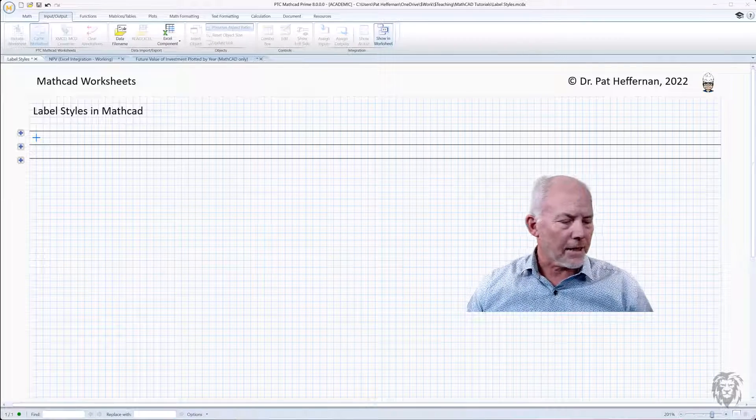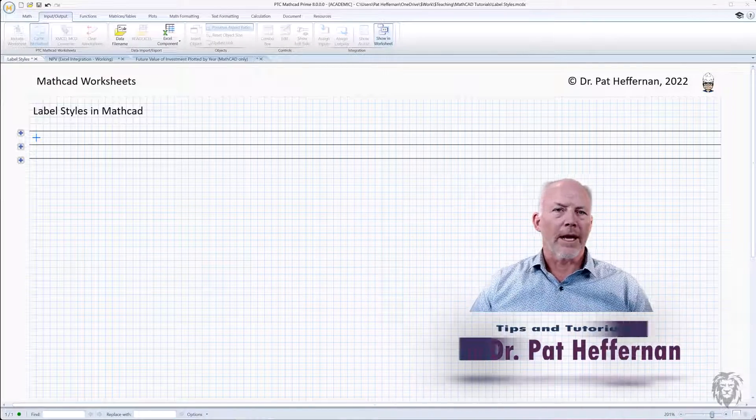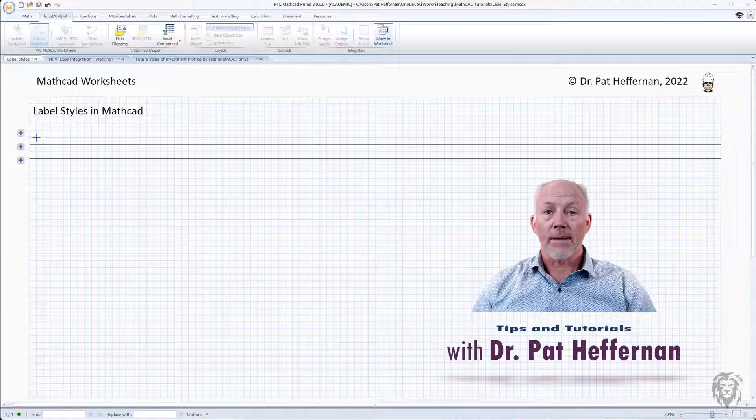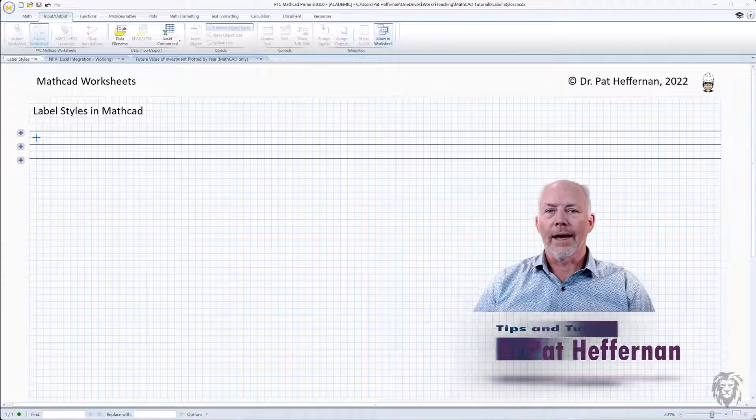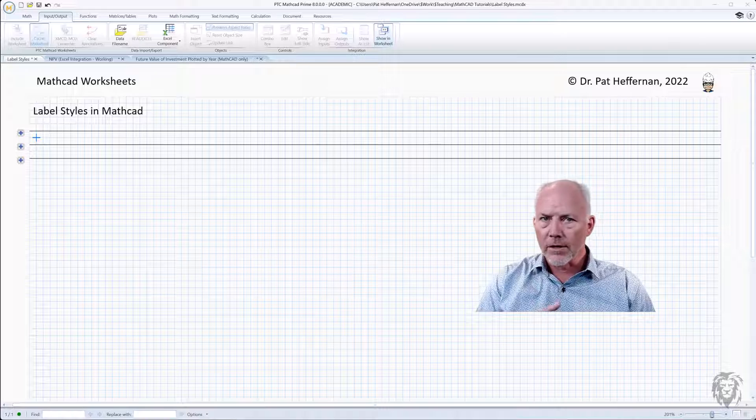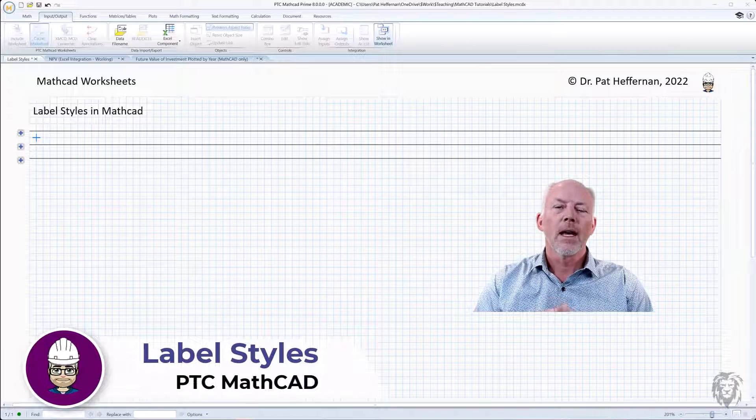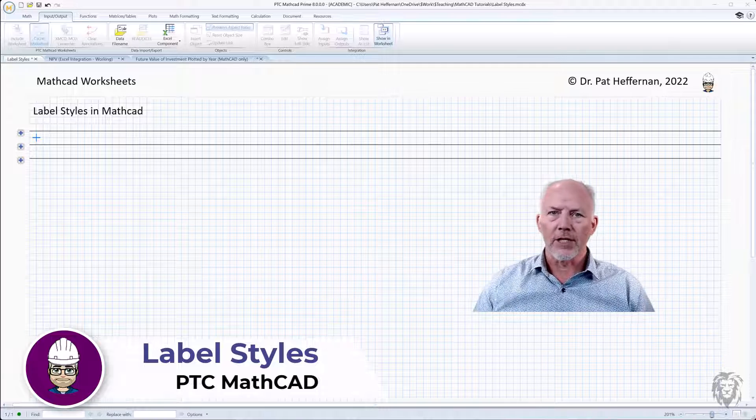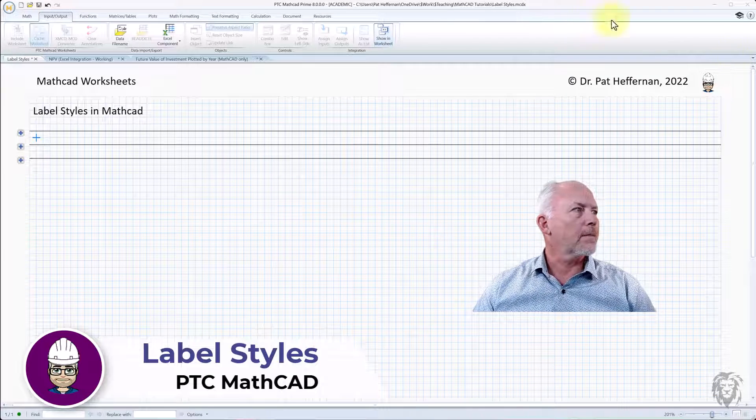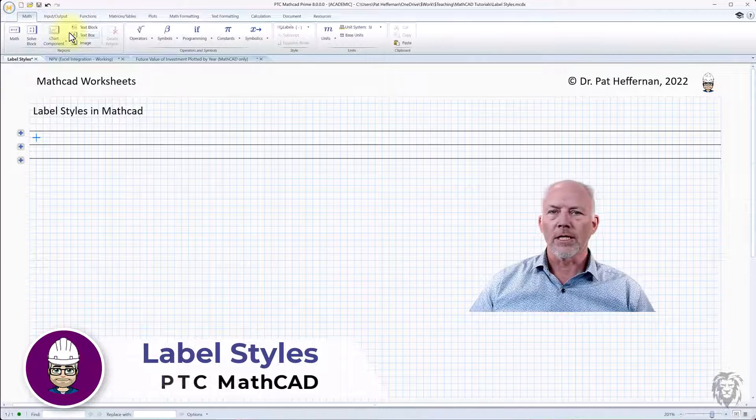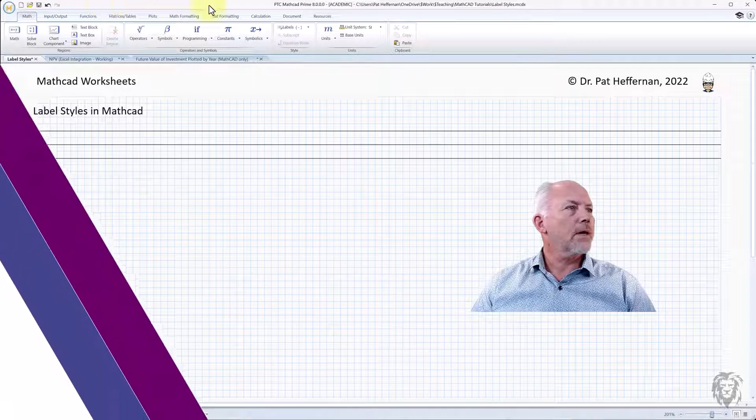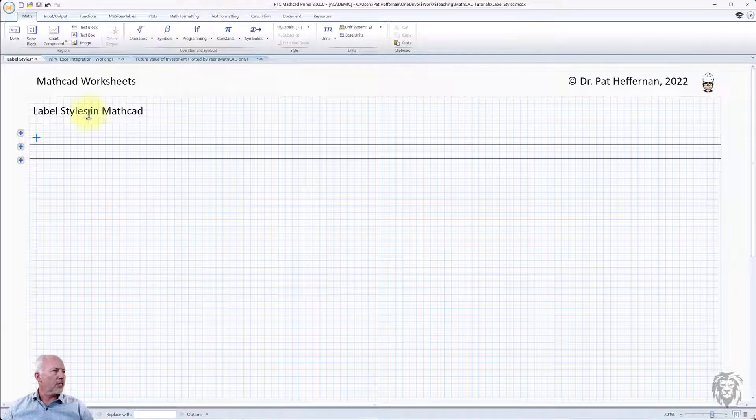Hi, welcome back. As I promised when we were looking at math formatting, I said I was going to do a separate one where we looked at labels and label formatting. So we're going to look at labels and what they are, or label styles and what they mean and how we can use them, but also then how we can adjust their formatting as we were adjusting math formatting. So we have a calculation sheet open.